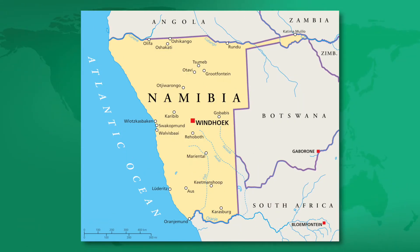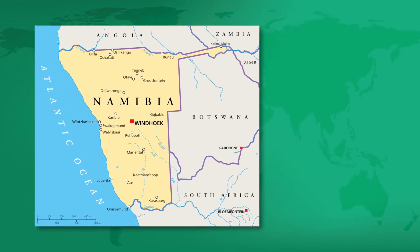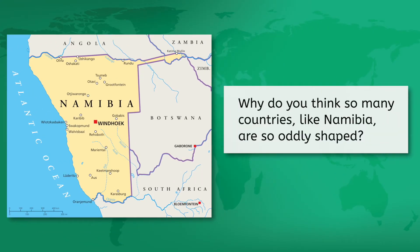So far we've learned that borders are super dynamic, changing over time due to cultural, economic, and political factors. Think back to why that geometric border wouldn't work in my backyard, and check out this map of Namibia. Why do you think so many countries like Namibia are so oddly shaped?